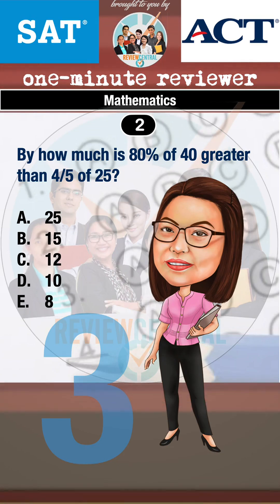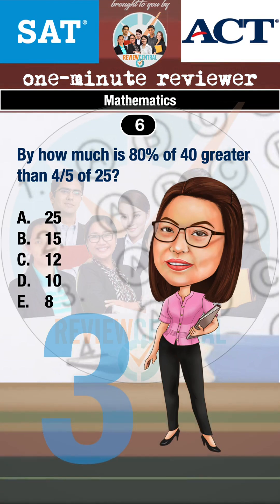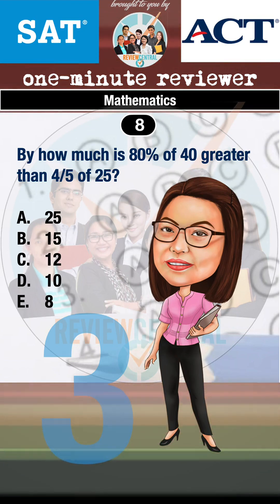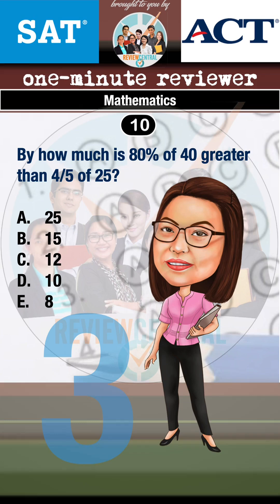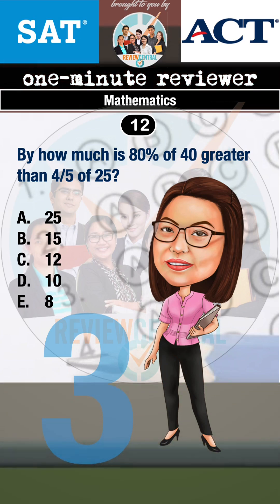By how much is 80% of 40 greater than four-fifths of 25? A. 25, B. 15, C. 12, D. 10, E. 8.